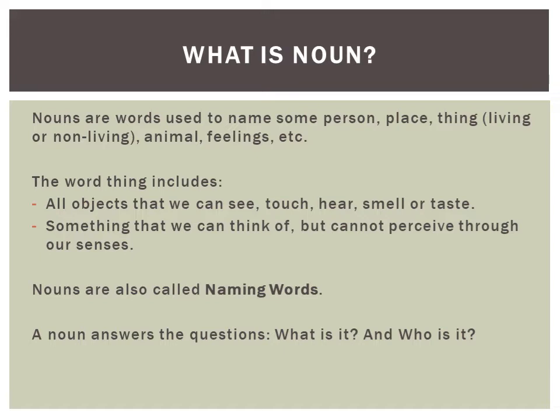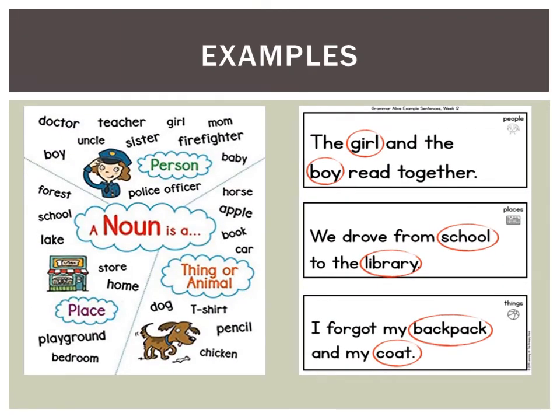Nouns are usually the first words that we learn as children. Let us look at some examples: doctor, teacher, forest, home, apple, dog, pencil, baby, etc. are all examples of nouns.